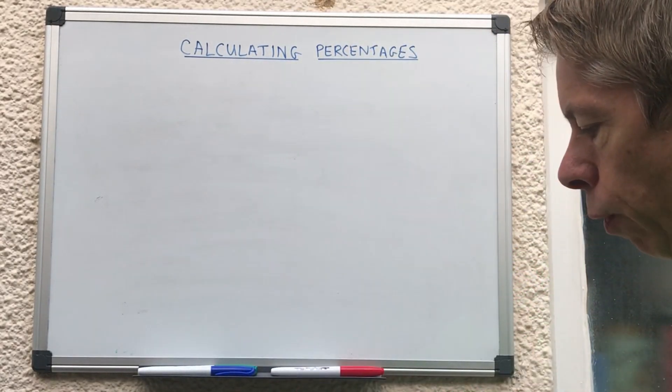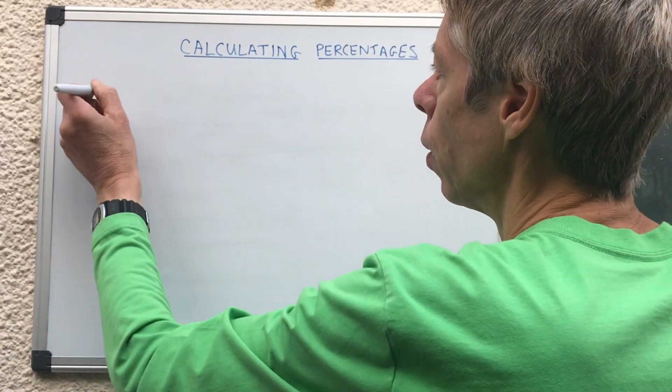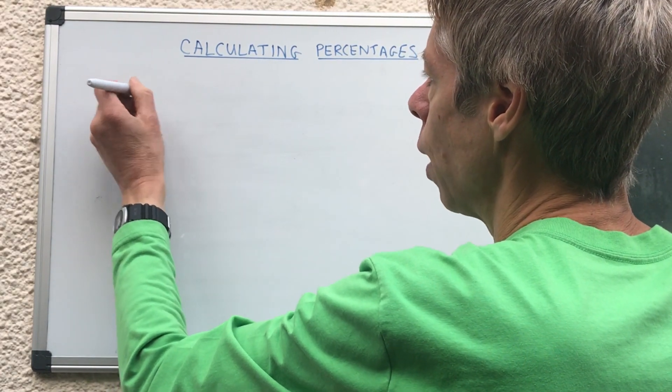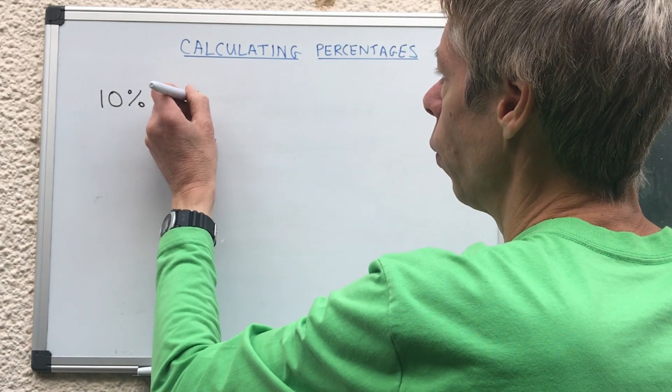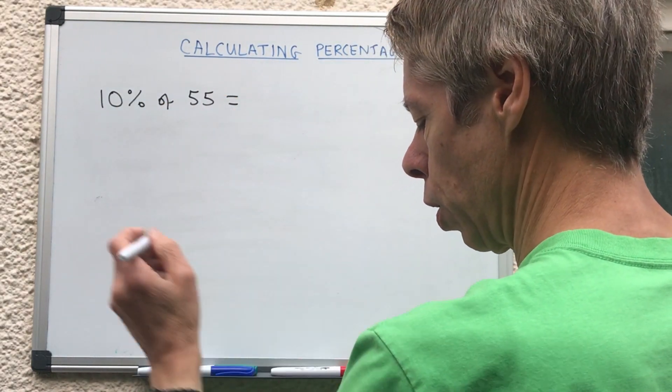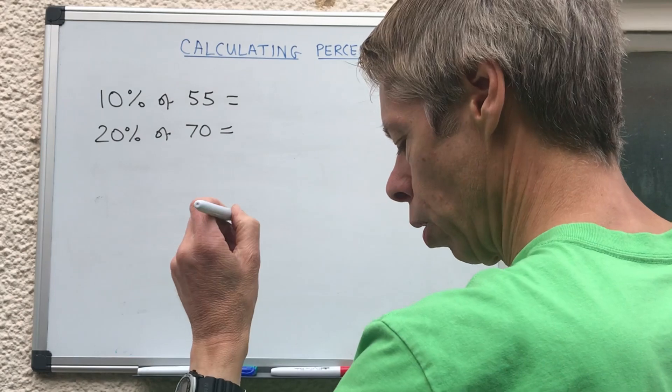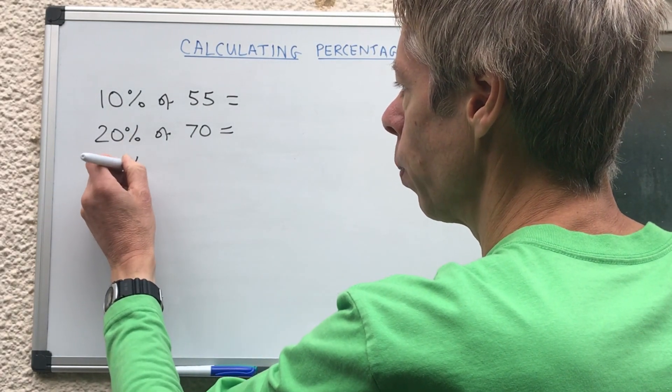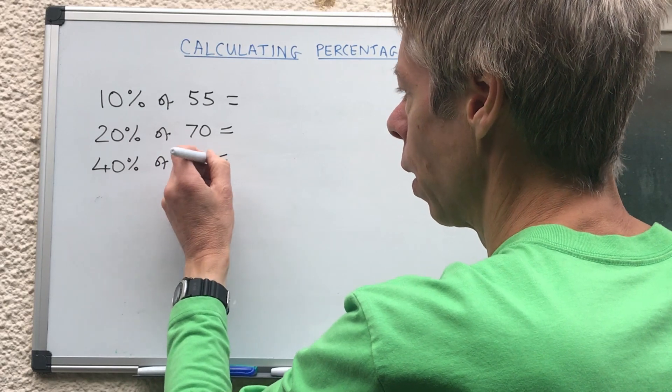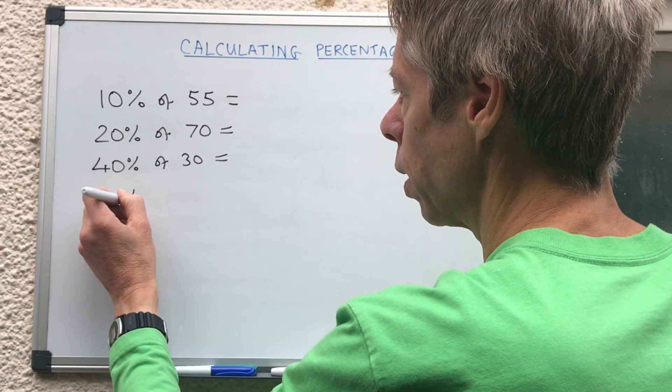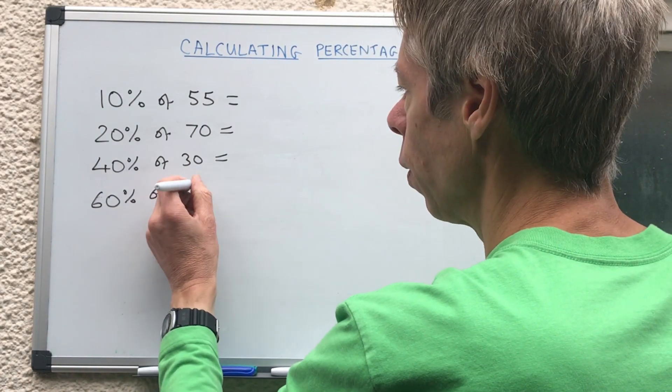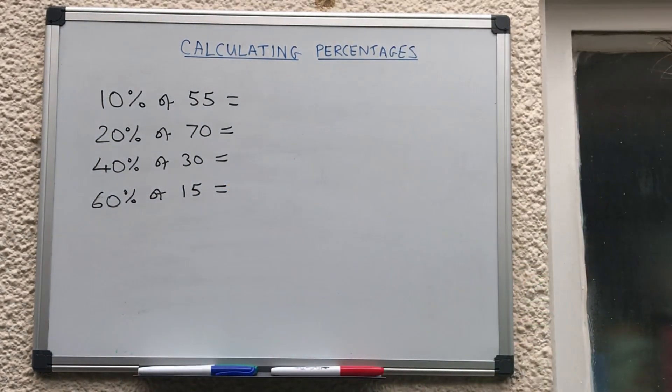Okay get your pens and paper ready then for the quiz questions. We're going to do four percentage calculations now. First of all, 10% of 55. Question 2, 20% of 70. Question 3, 40% of 30. And question 4, 60% of 15. So if you haven't finished yet, stop the video, do the working out, and then restart and see if you've got the same answers as me, which hopefully are the right answers.